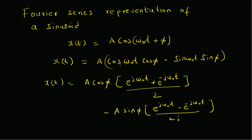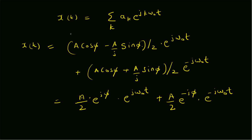To summarize: given x(t) = A·cos(ω₀t + φ), where A is the amplitude, ω₀ is the frequency, and φ is the phase, we expand using trigonometric identities and then apply Euler's formulas. This gives x(t) = A·cos(φ)·[e^(jω₀t) + e^(-jω₀t)]/2 plus a similar structure for the sine term. We then gather terms by frequency ω₀ and -ω₀.